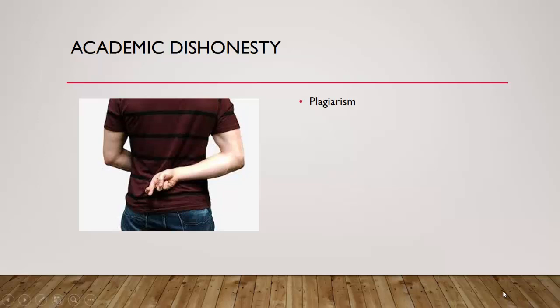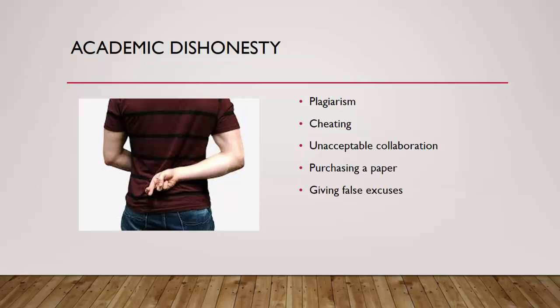Other forms of academic dishonesty include, but are not limited to, cheating, unacceptable collaboration — where you are assigned to work on something individually but work with another student without being honest with your professor — purchasing a paper, and giving false excuses for why your work might be late or not turned in at all. You can also demonstrate academic dishonesty by using incorrect citations in your work.